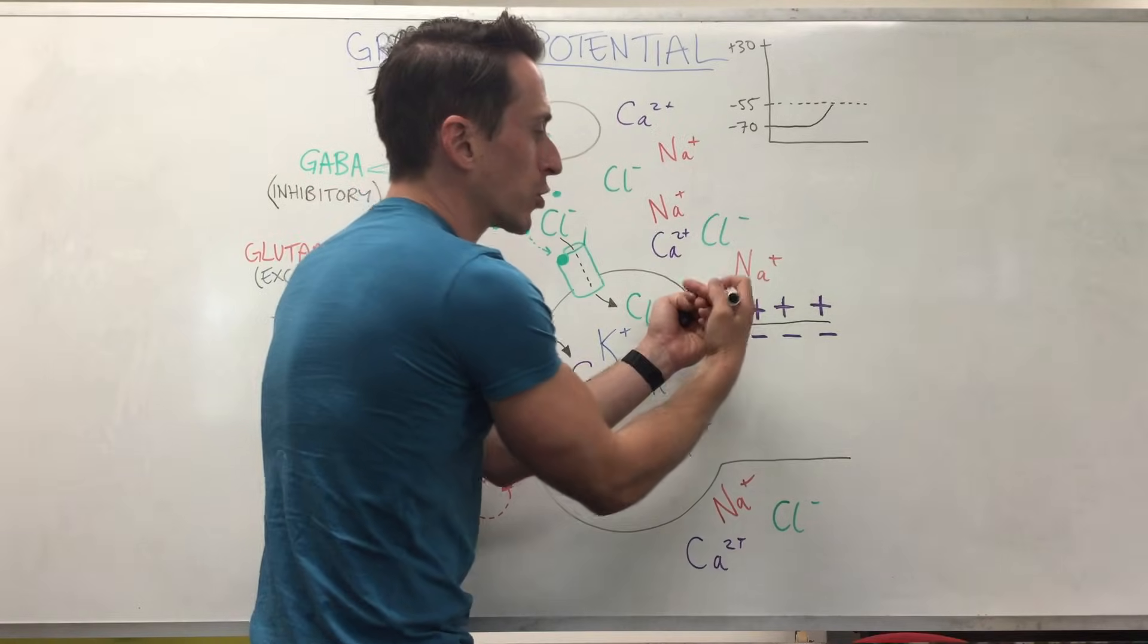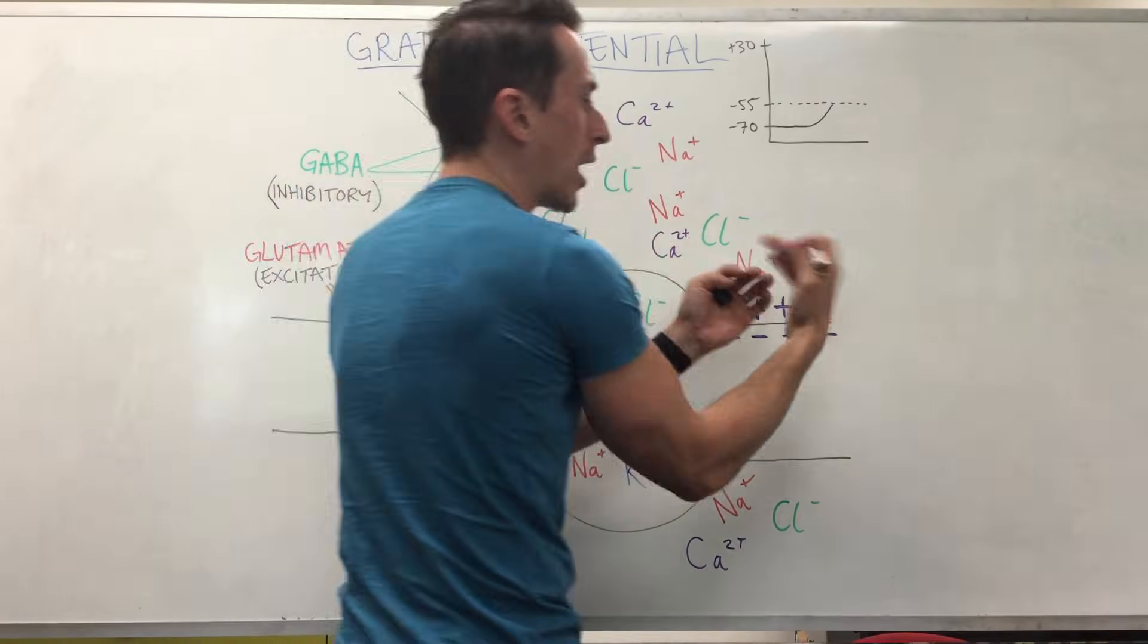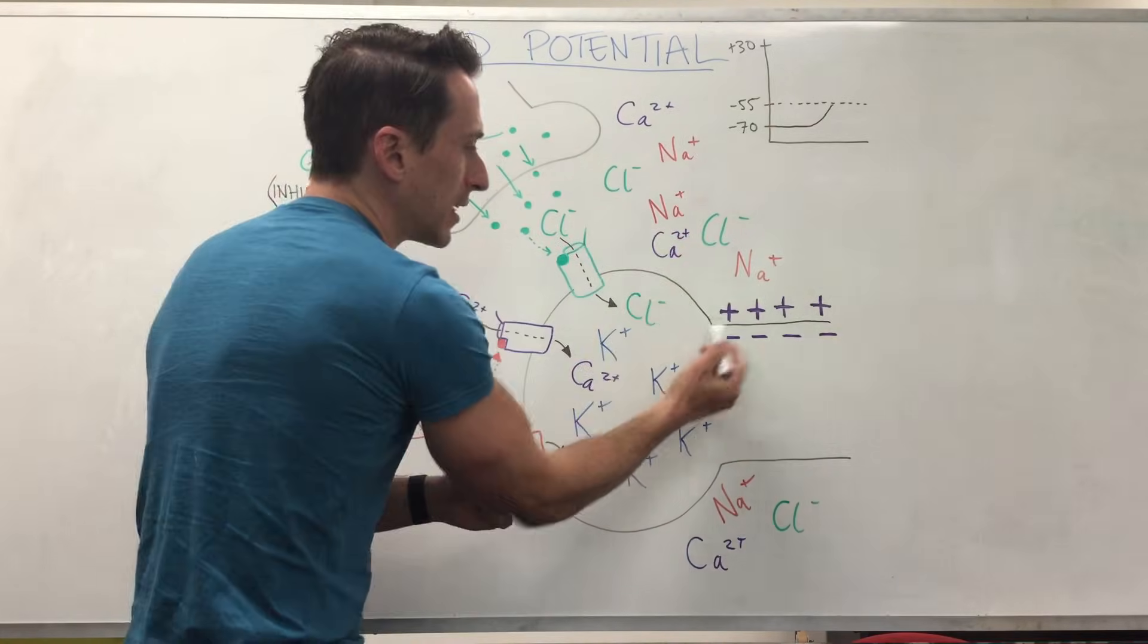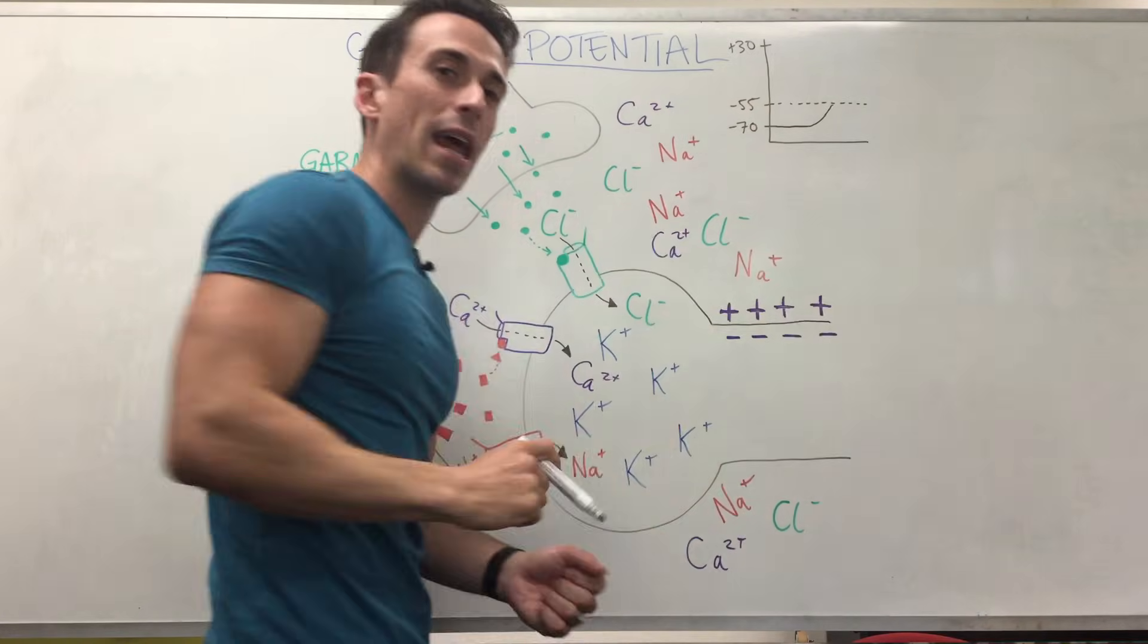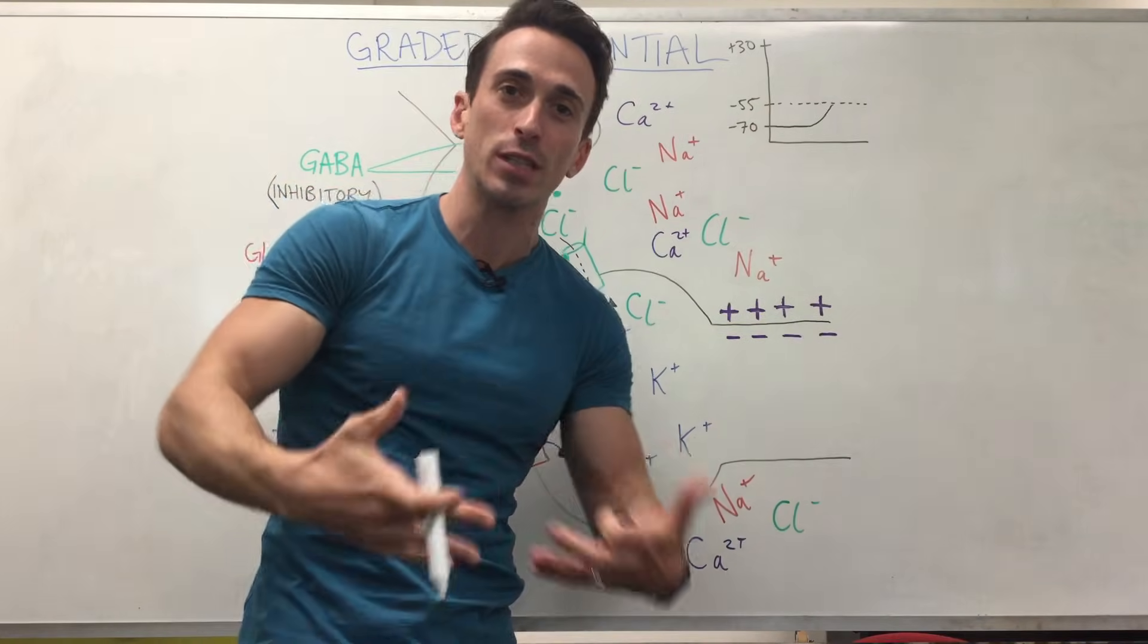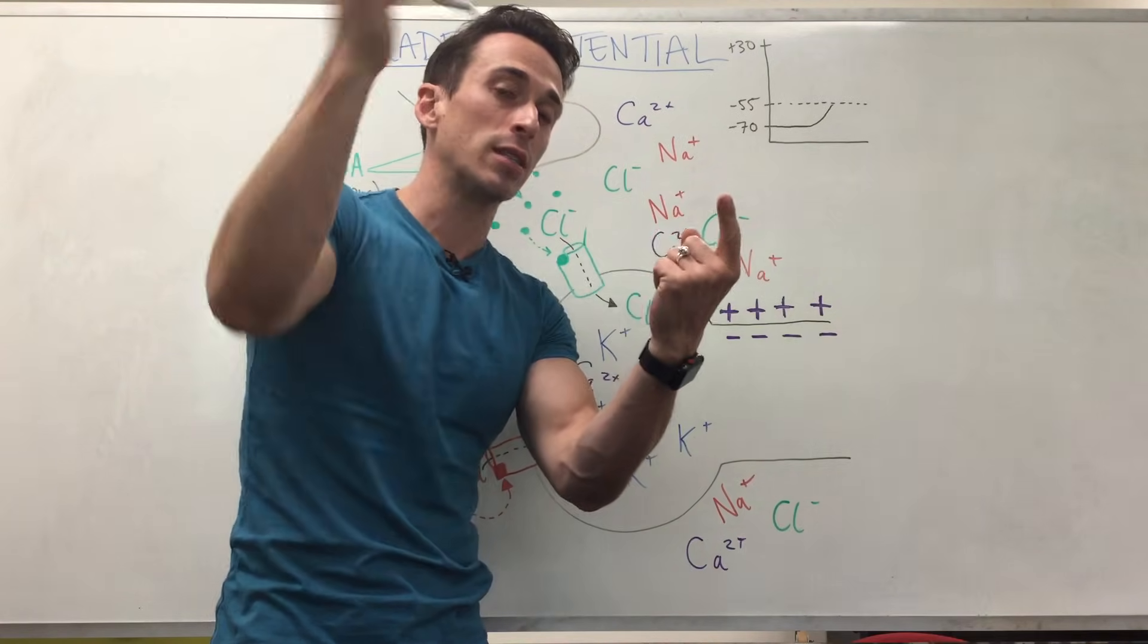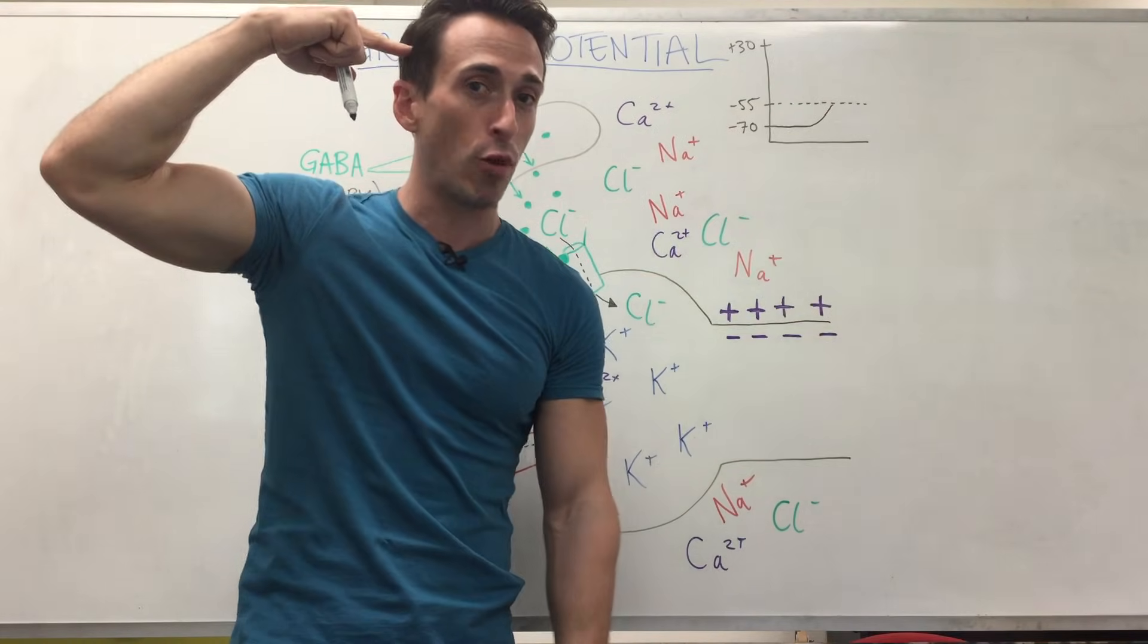Once it hits negative 55, all of these positive sodium channels open up in this domino-like fashion, letting all this positive sodium move in. It starts here, it moves in, and then it goes all the way down that axon. That's actually what an electrical signal is. That's how we know that something's touching my finger. Sodium ions are simply jumping into neurons all the way down my arm, into my spine, up to my brain.